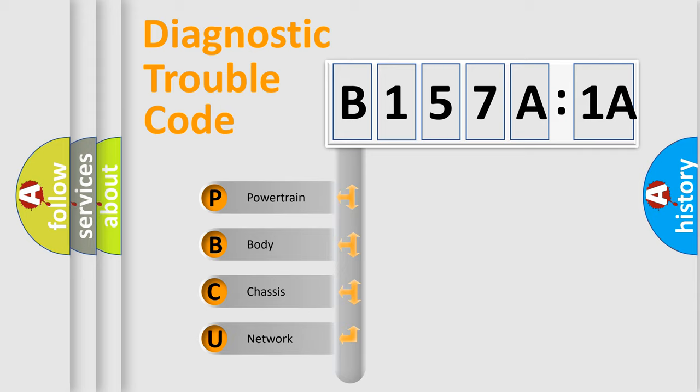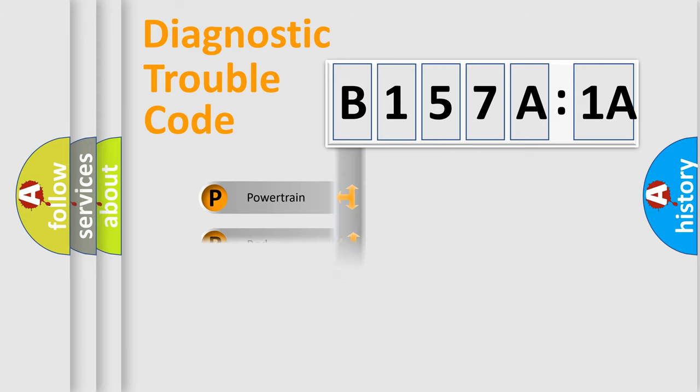If the second character is expressed as zero, it is a standardized error. In the case of numbers 1, 2, 3, it is a more specific expression of the car-specific error.